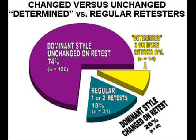26%, or over a quarter of the people who actually changed styles on retests, took the survey three or more times to do it. In total, these 18 determined people took a total of 48 surveys. 14 of these 18 people ultimately managed to change their dominant style results. If we remove these 14 people on the grounds of gross distortion, the reliability rate would jump from 74% to 81% — and this just removed the most egregious examples.